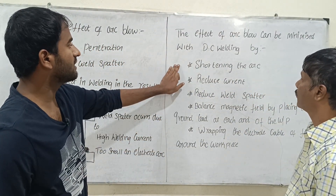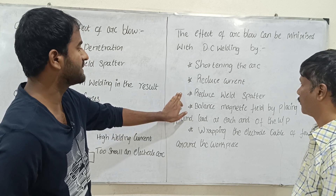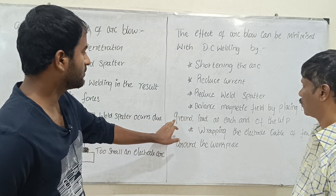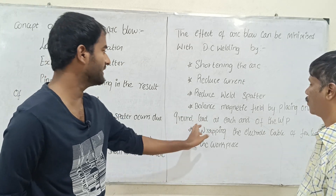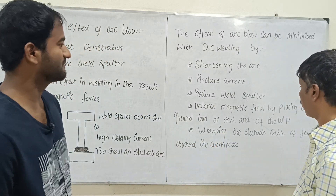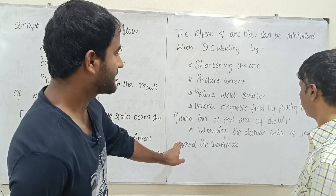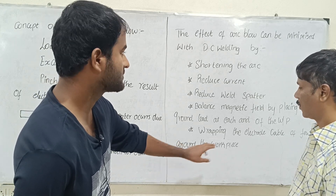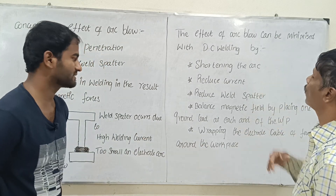In DC welding, to address arc blow: shorten the arc, reduce the current to reduce weld spatter, balance the magnetic field by placing one ground lead at each end of the welding workpiece, and wrap the electrode cable a few turns around the workpiece.